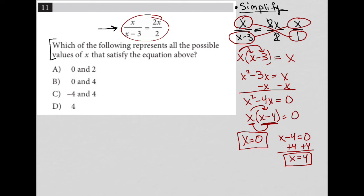So now I'm looking at the question. The question says, which of the following represents all the possible values of x that satisfy the equation above? Well, I already found them. X can equal 0, and x can equal 4. There's only one other thing to be kind of wary of here before I just go on and say that choice B is the correct answer because it has 0 and 4.